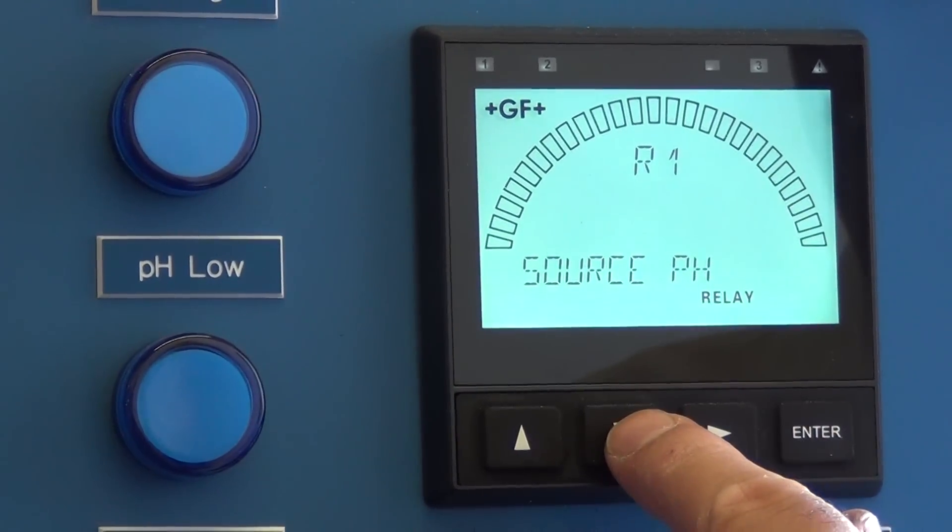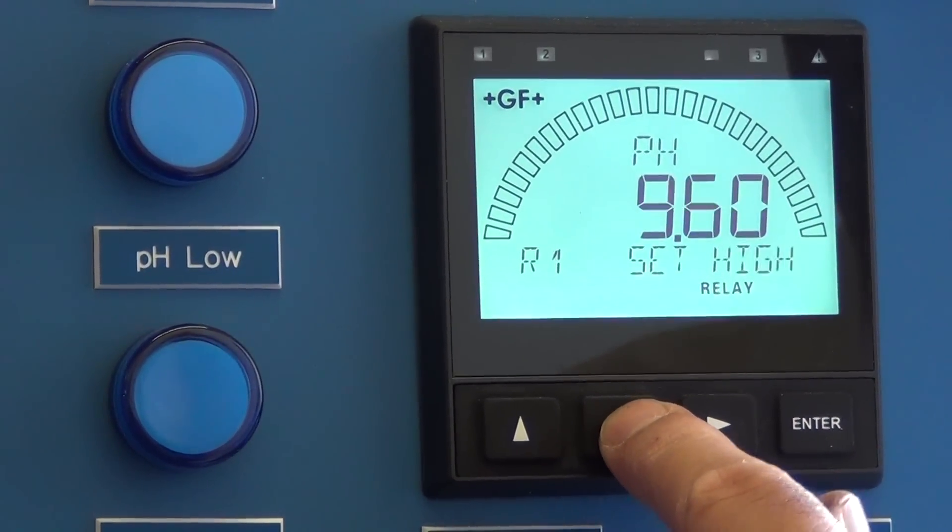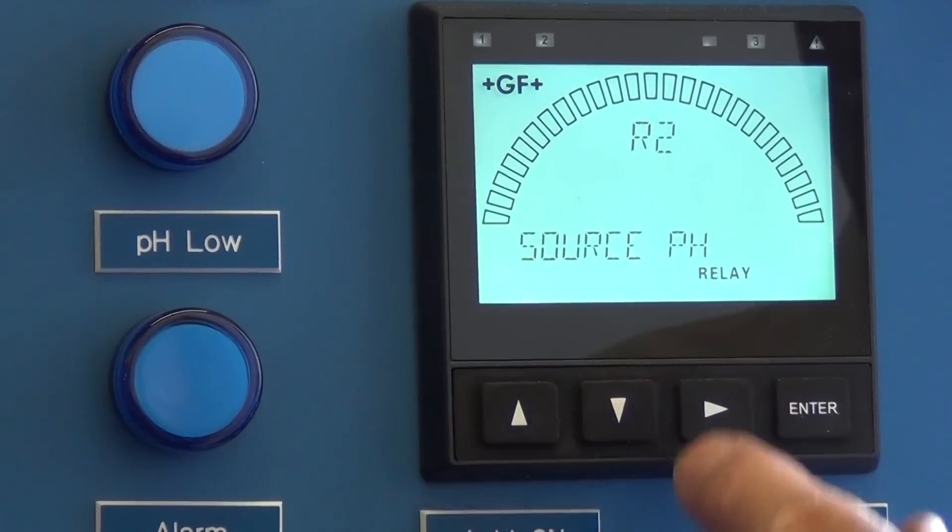Again, R1 is your alarms, R2 is the acid pump.